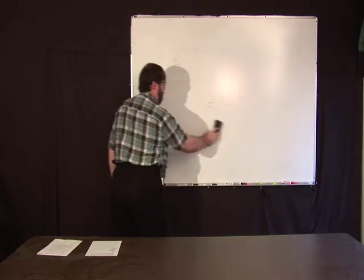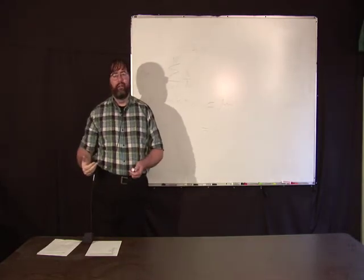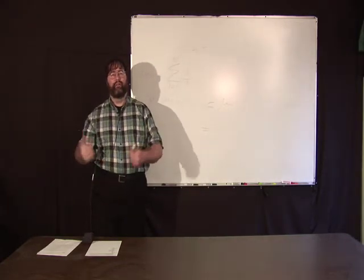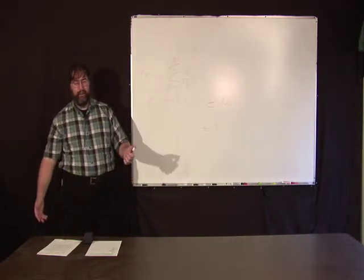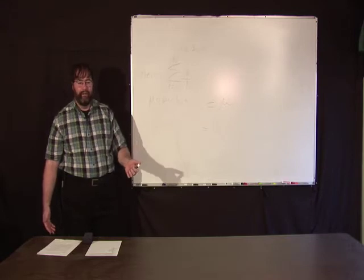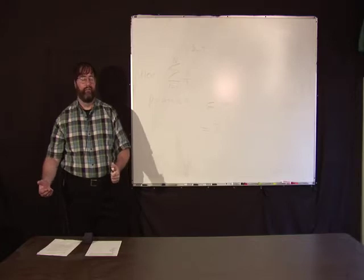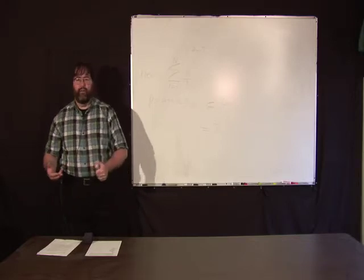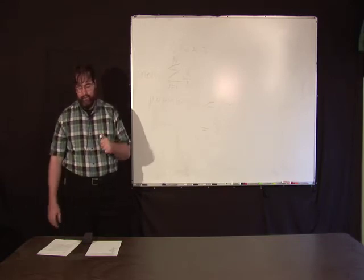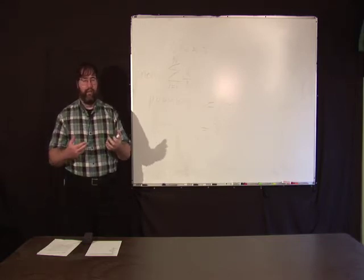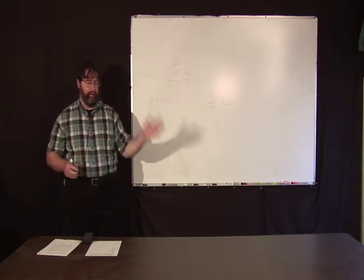The mean is an example of something called a measure of central tendency — a measure of the middle of your data set. It isn't the only measure. One example is called the median. You may have heard terms like median income or median house prices on television. The median value is the value for which exactly half of the data points are greater than it and half are less.